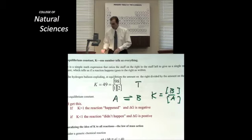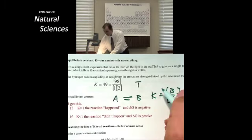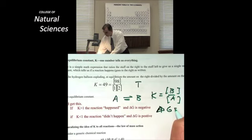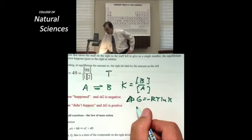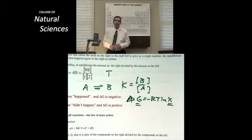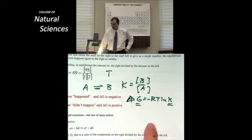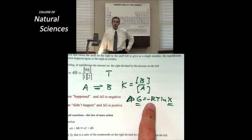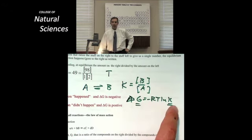We will learn that there is actually a very nice, simple relationship between delta G and the equilibrium constant K in an upcoming lecture, but there's the actual number describing it. Delta G is equal to minus RT log K.